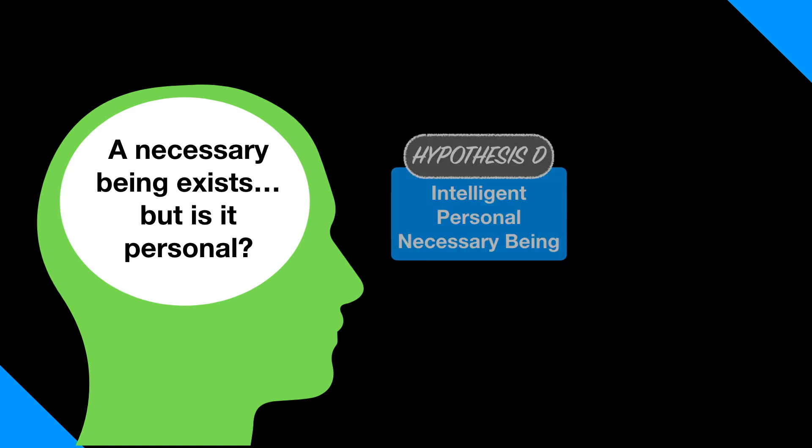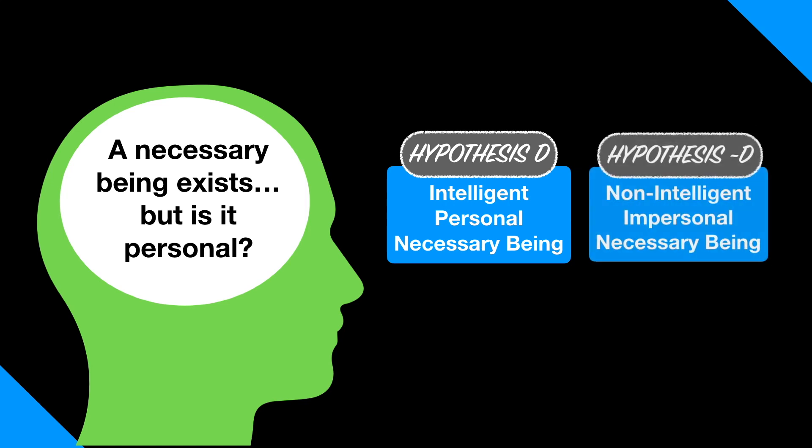Here's the bottom line. When you have competing hypotheses, and the evidence doesn't guarantee one hypothesis over the other, Bayes' Theorem can help. At this point in Rhoda's argument, we're faced with a similar situation. We have reason to think that a necessary being exists, but there are competing hypotheses about whether this being is personal or not. One hypothesis says this is an intelligent necessary being. The other hypothesis says it's non-intelligent. So what do we do?